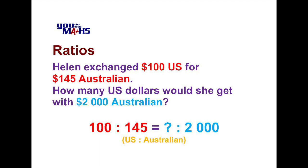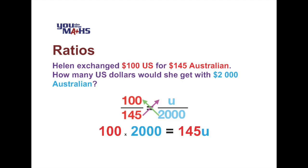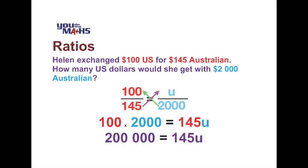Again we take those ratios and write them as fractions: 100 divided by 145 on the left side, and an unknown amount — which we'll call U — divided by 2,000 on the right-hand side. Using cross multiplication, which involves multiplying both denominators across to the opposite side's numerator, we get 100 multiplied by 2,000 on the left, and 145 multiplied by U on the right. So 100 times 2,000 gives us 200,000, and 145 times U is written as the expression 145U.